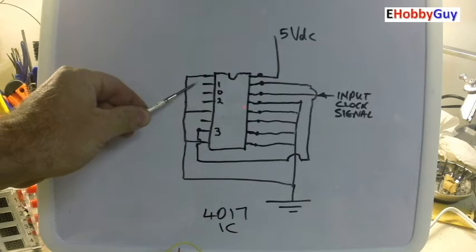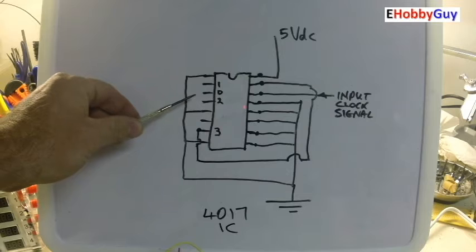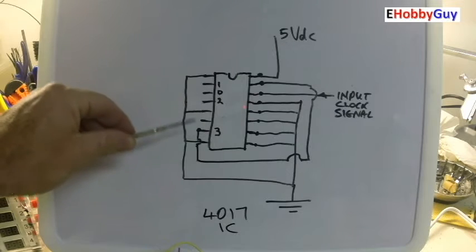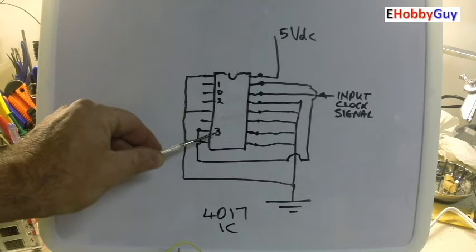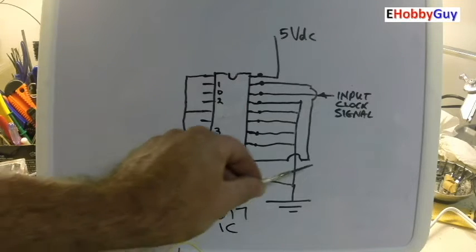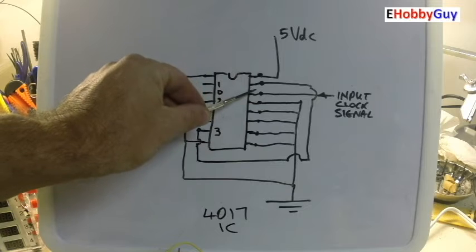Now if you want to divide by three, you go to the fourth output. The fourth output would be 0, 1, 2, 3. So you'll see number three here is tied in to the reset pin which is pin number 15.